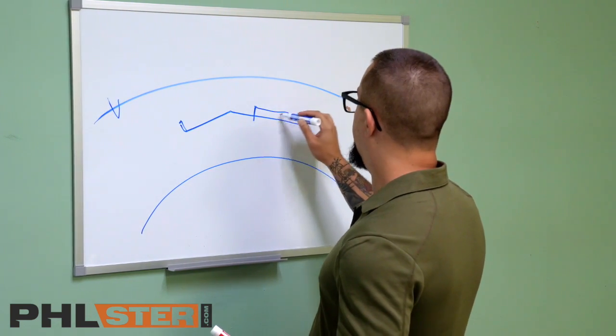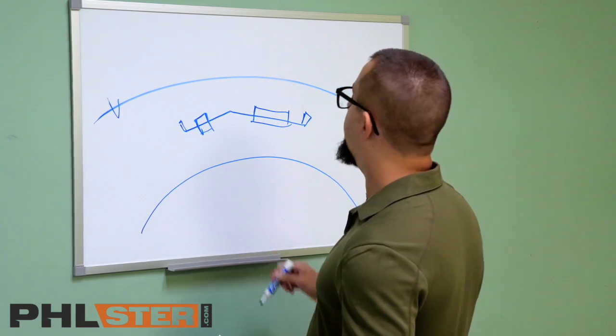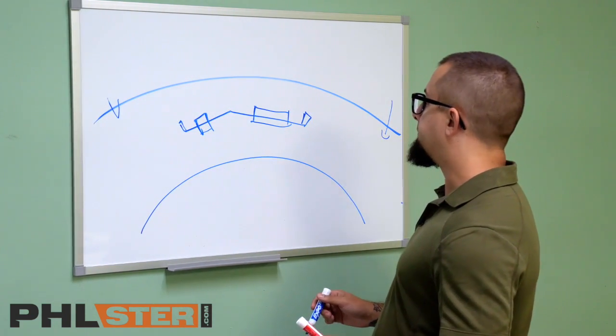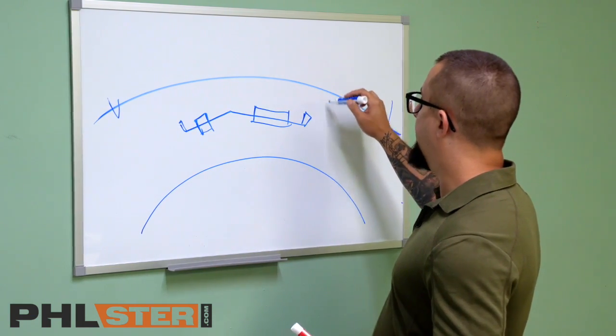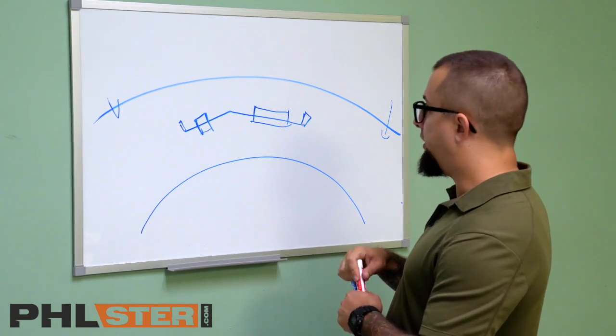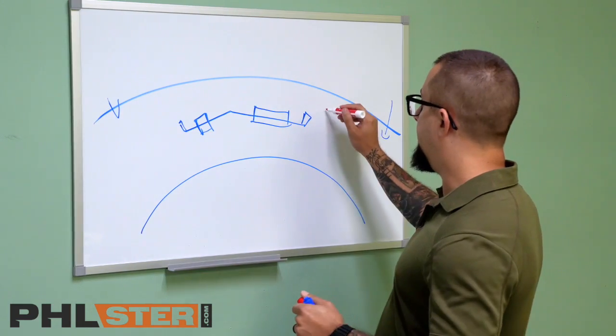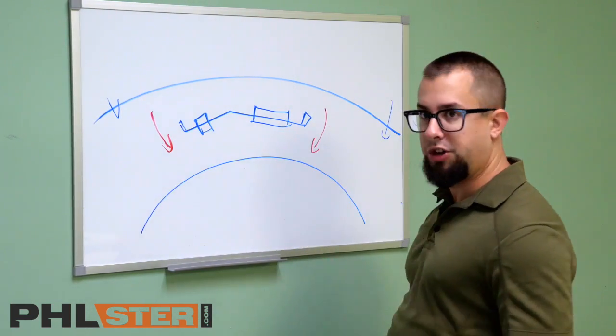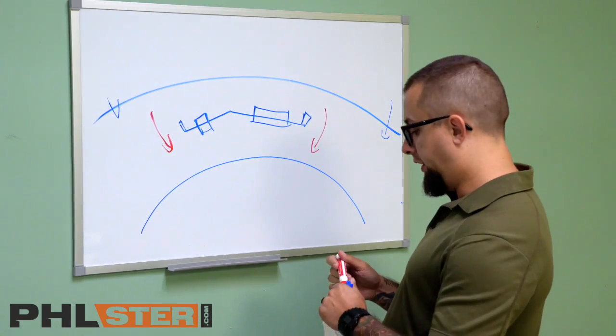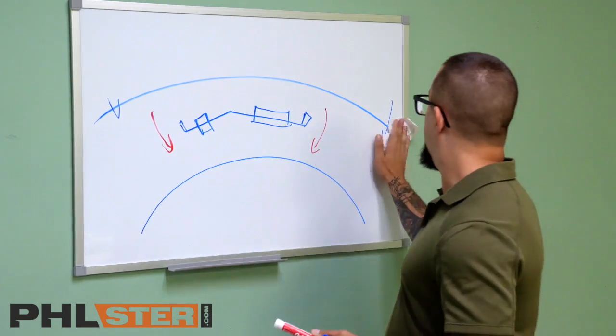What happens is, you set up a circumstance in which as the rotational forces are applied here and here, they resist each other. So, let's back it up even further.